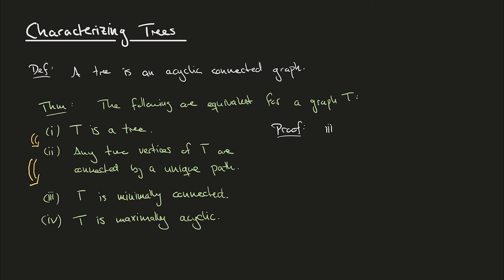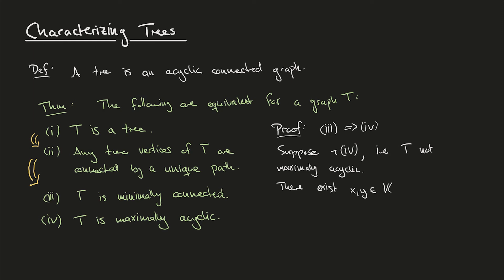Now let's show that 3 implies 4. We'll do this by showing the contrapositive — we suppose that 4 does not hold, meaning T is not maximally acyclic. Hence there exist vertices x and y such that if we add the edge xy, then T plus xy is still acyclic. That statement is just what it means for T to be not maximally acyclic.